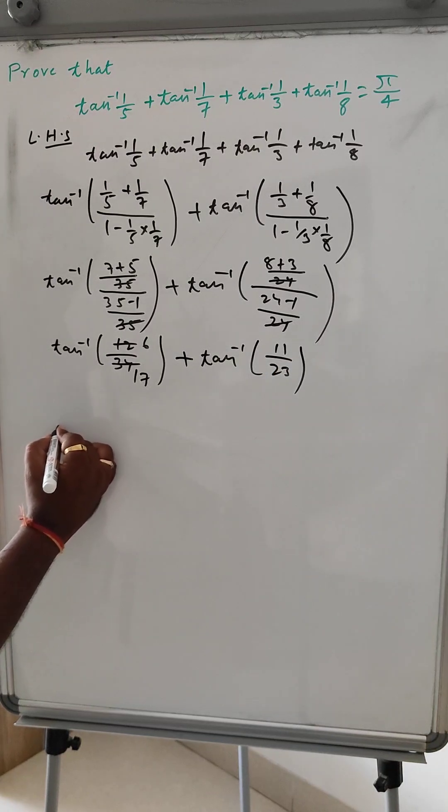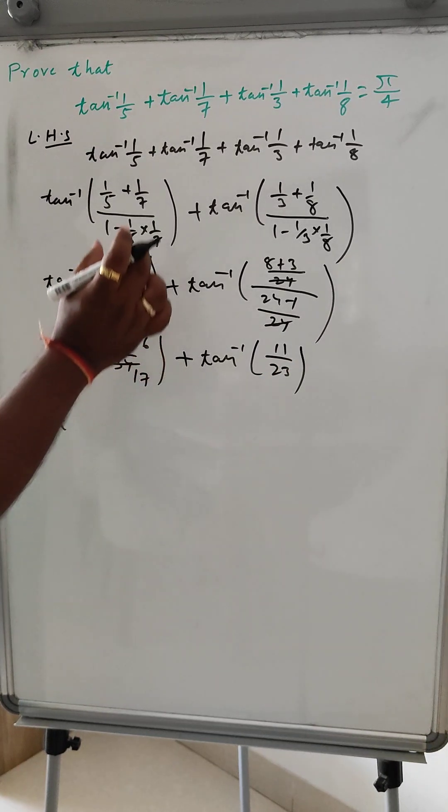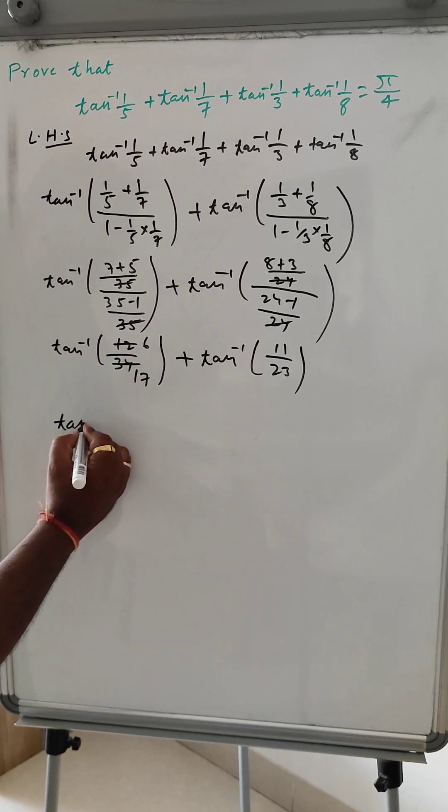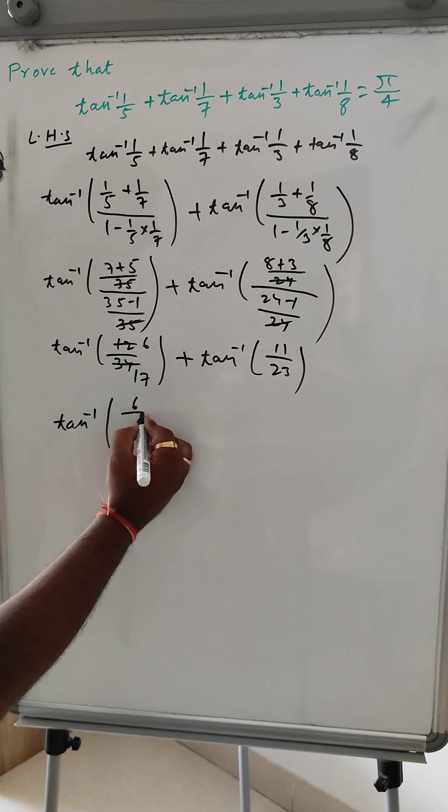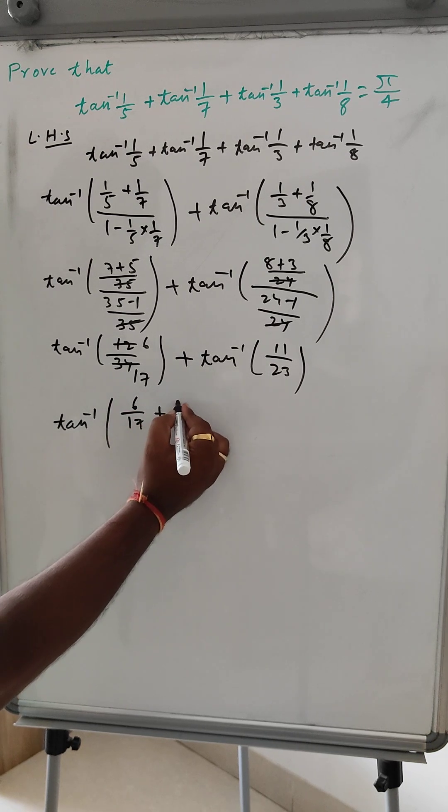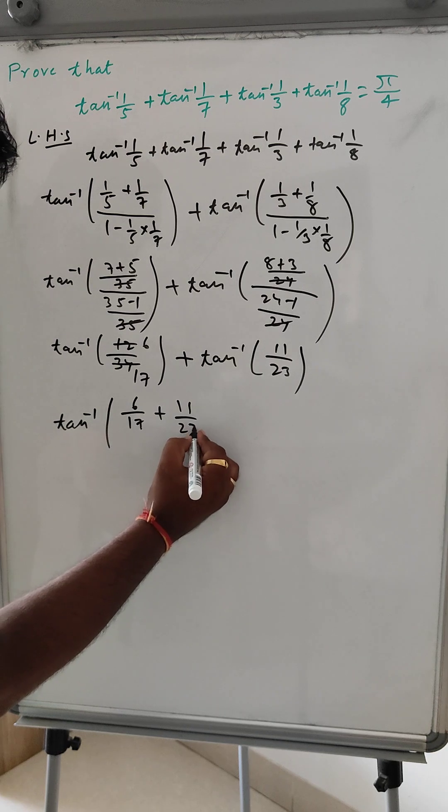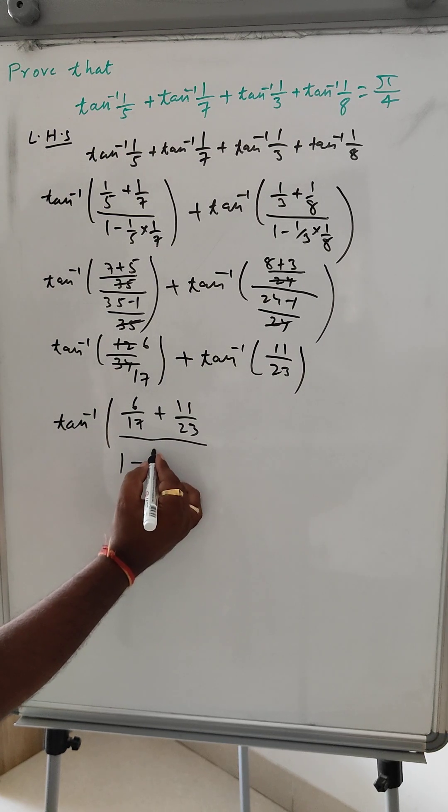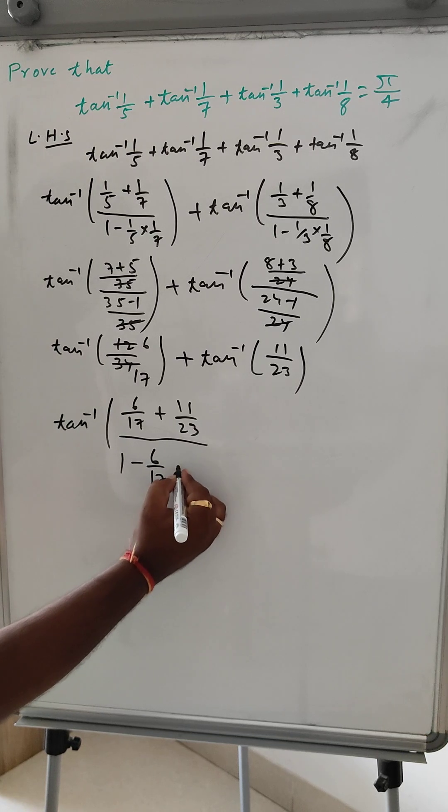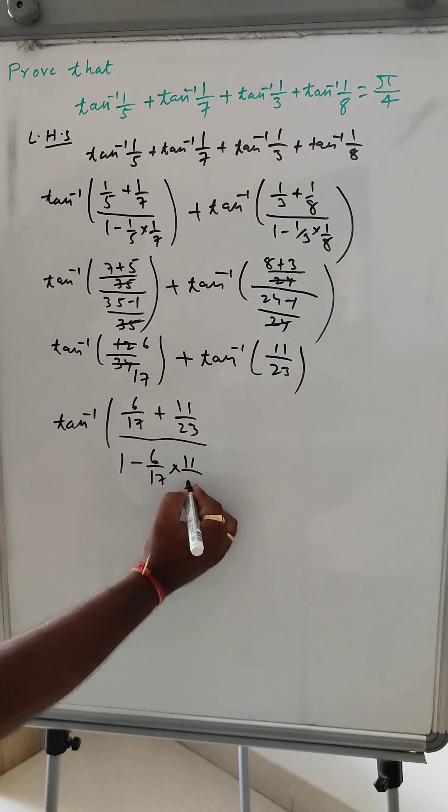Now we can write again, this is tan inverse A plus tan B formula we can use. Tan inverse 6 by 17 plus 11 by 23 divided by 1 minus 6 by 17 into 11 by 23.